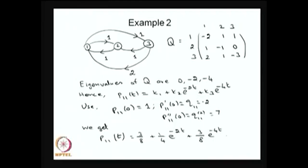The goal is to find the time-dependent solution for this example. We can write the forward Kolmogorov equation: P'(t) = P(t) × Q. Since it is a 3×3 matrix, we have 3 equations, plus the condition that the summation of probabilities equals 1. Starting with the initial condition that the system is in state 1 at time 0 with probability 1, we solve those 3 equations.